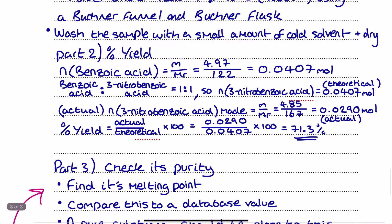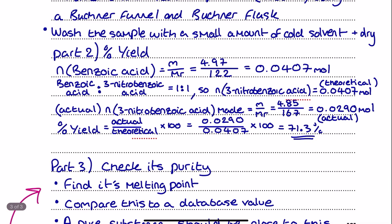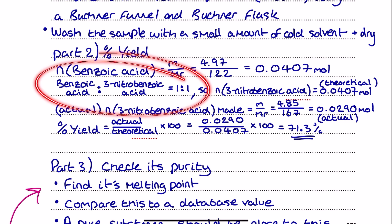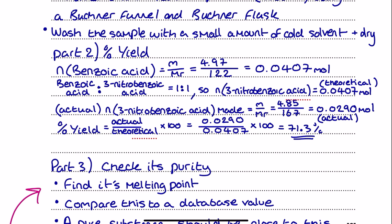For part two, the percentage yield calculation — very common in the paper 2 exam. For these big organic percentage yield questions, the ratio between organic molecules is very often one-to-one. First, calculate moles of benzoic acid: mass divided by relative molecular mass, which is 4.97 divided by 122, giving 0.0407 mol of benzoic acid being used.